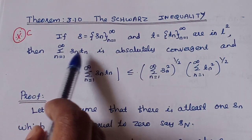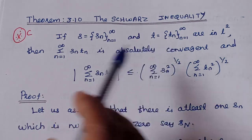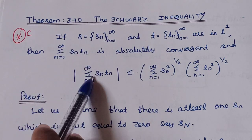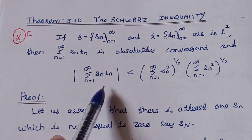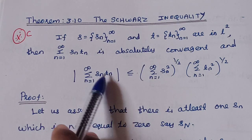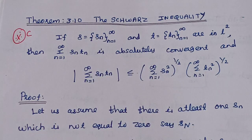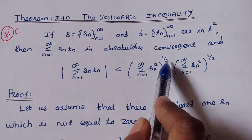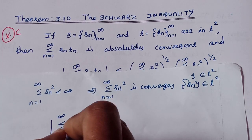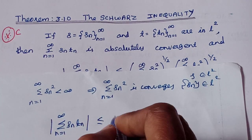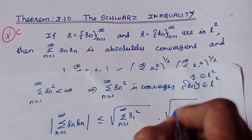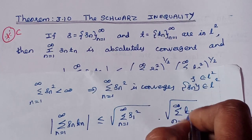The summation SnTn is absolutely convergent, and the modulus of summation n=1 to infinity of SnTn is less than or equal to the product: the square root of summation n=1 to infinity of Sn squared, multiplied by the square root of summation n=1 to infinity of Tn squared. That is, the whole power 1/2 times the whole power 1/2.